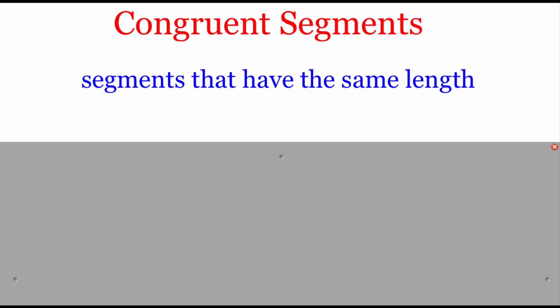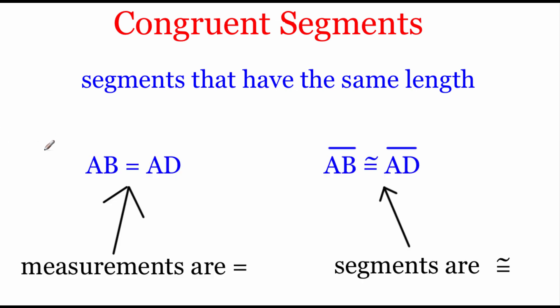One idea that's really important in geometry is the idea of things being congruent, and the word congruent means the same size. So if we're talking about congruent segments, these are multiple segments that have the exact same length. Notice there's a little bit of a difference between the way these things are written. The ones without the bar over the top refer to the length of the segments, and if we're talking about their lengths then we say those things are equal. But if we're talking about the segments themselves, we use the congruent symbol — an equal sign with a squiggly line over the top — and we say those segments are congruent.